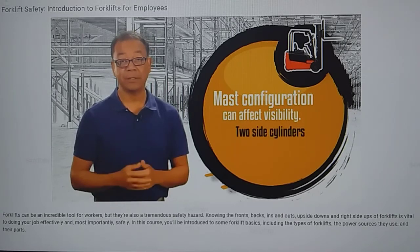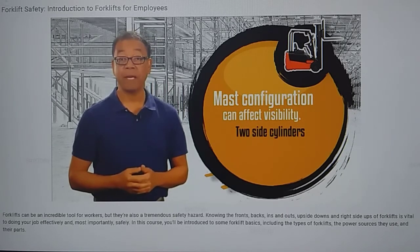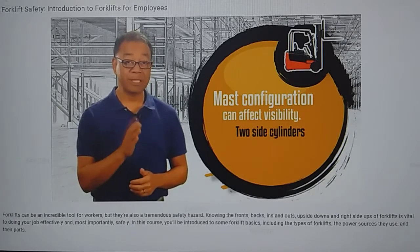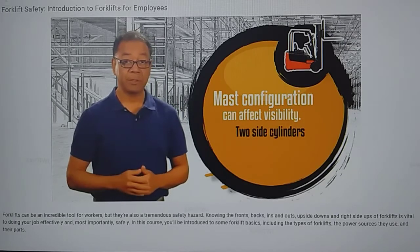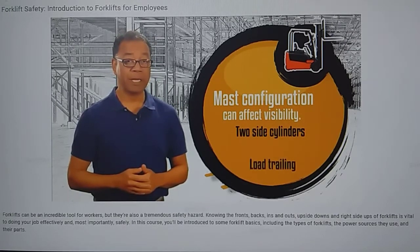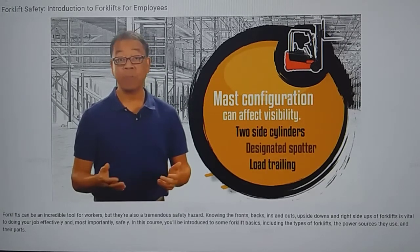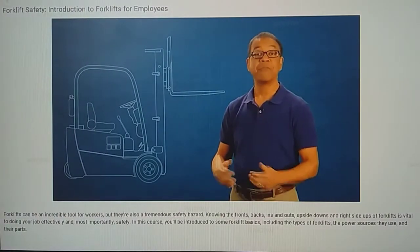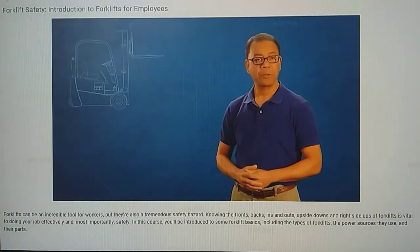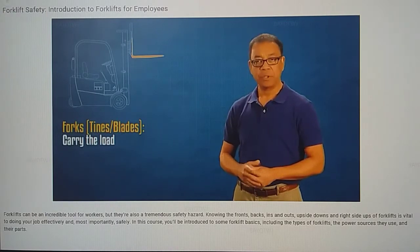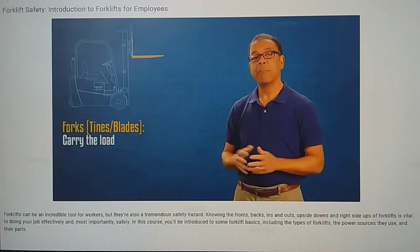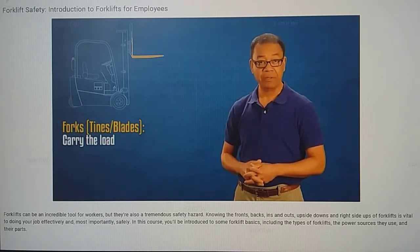One last thing to remember about the mast is that the configuration can affect your visibility while operating the forklift. Newer models use two side cylinders and offer better visibility. If you're operating an older model with a single central cylinder, you'll need to travel with a low load trailing or use a spotter to achieve adequate visibility. Next, we have the forks, also known as tines or blades, which actually carry the load. They have a heel where the fork curves upward, as well as an upright shank that attaches to the carriage.